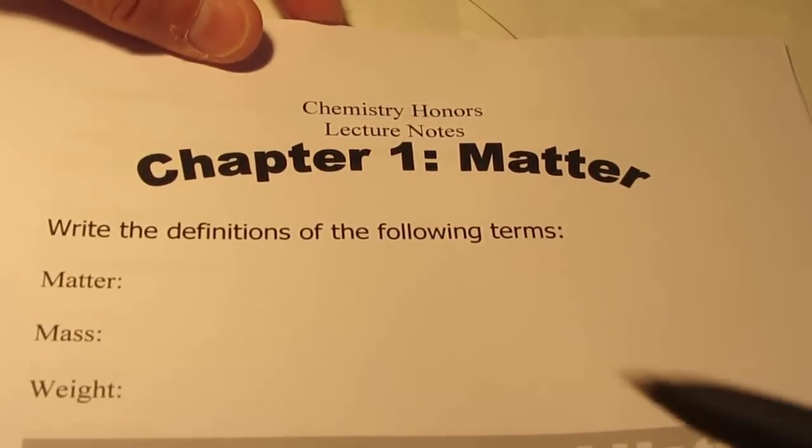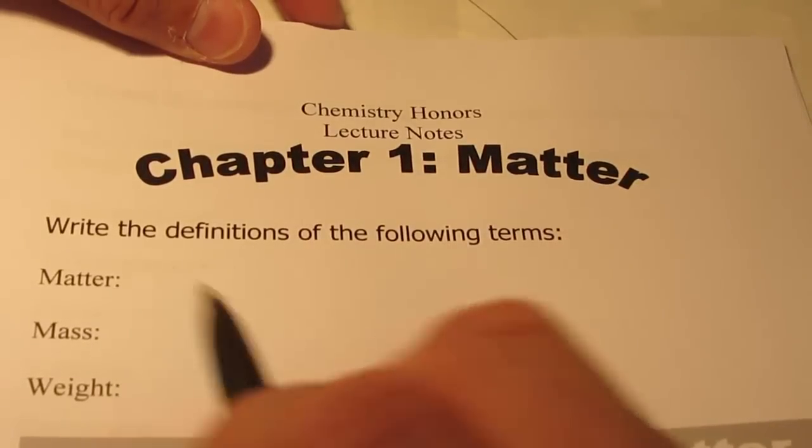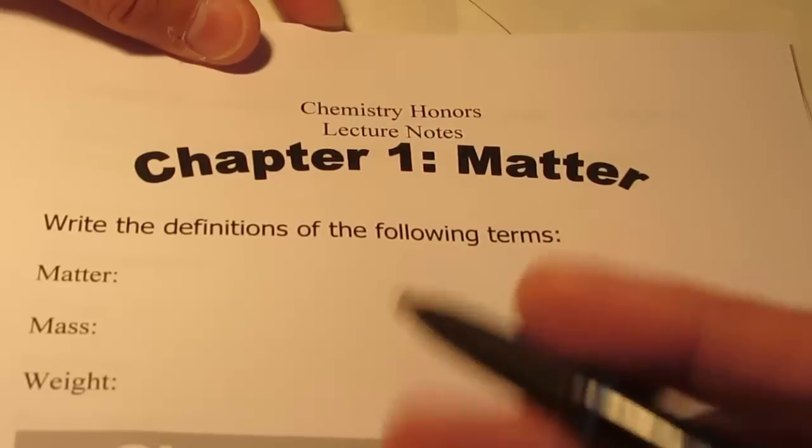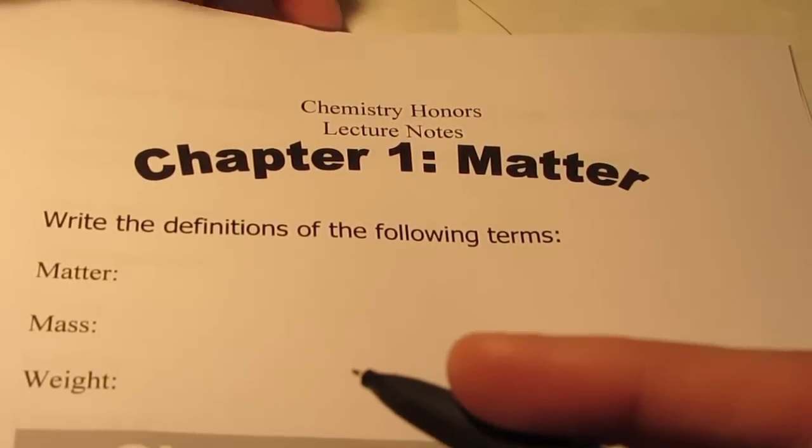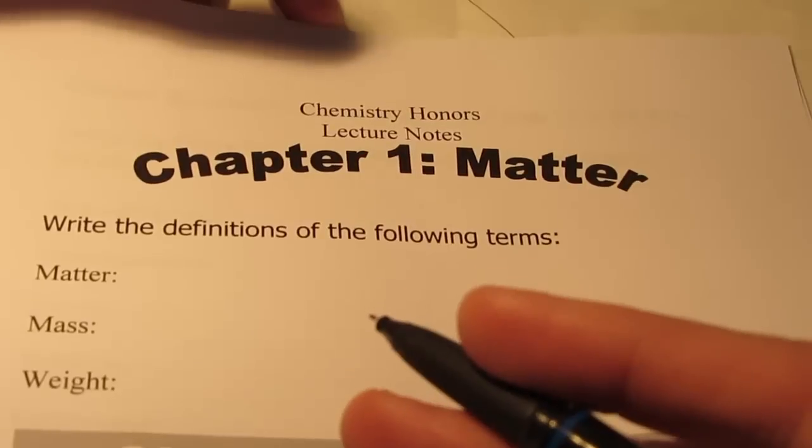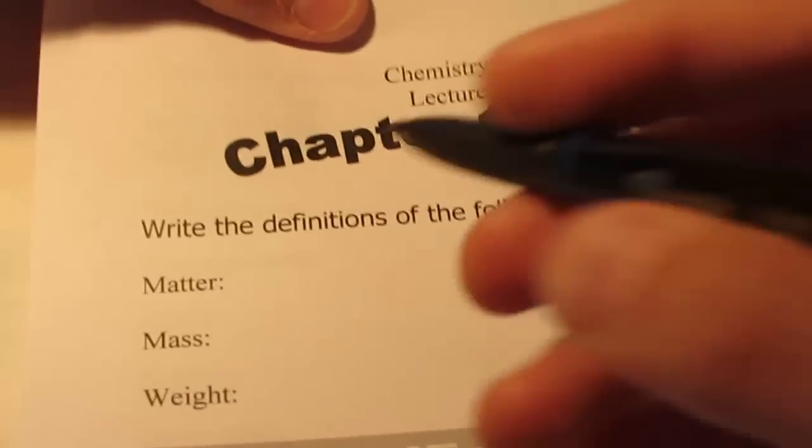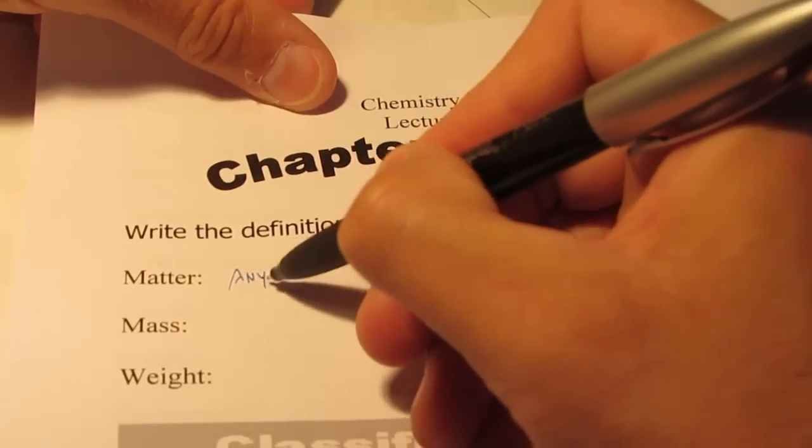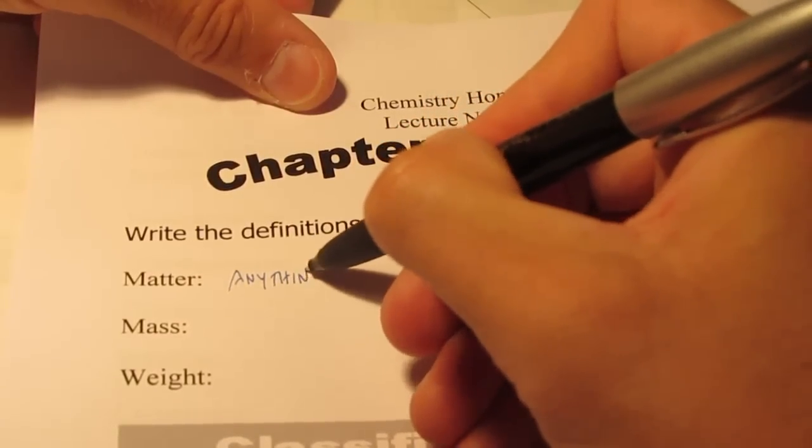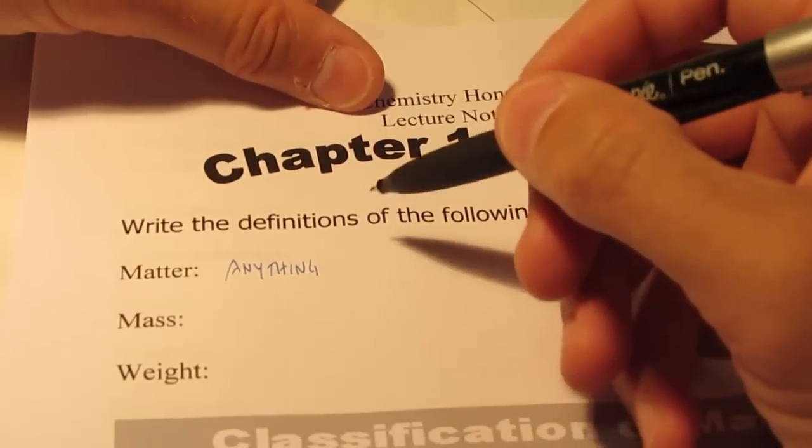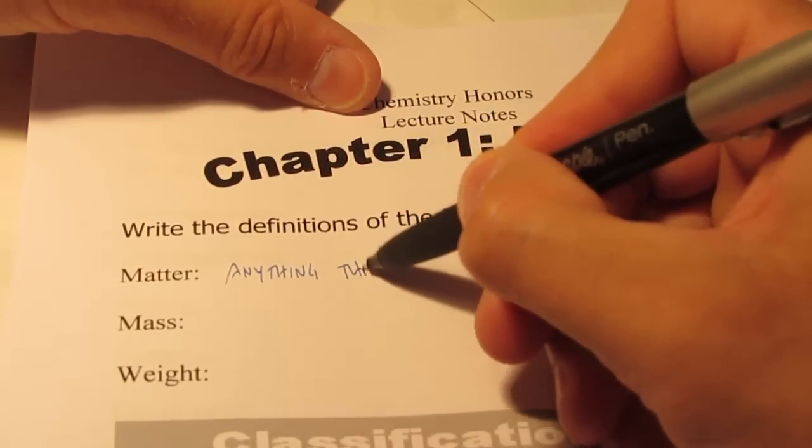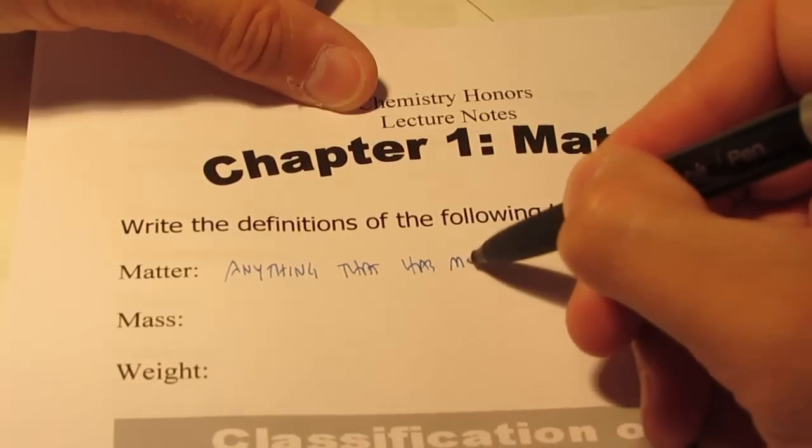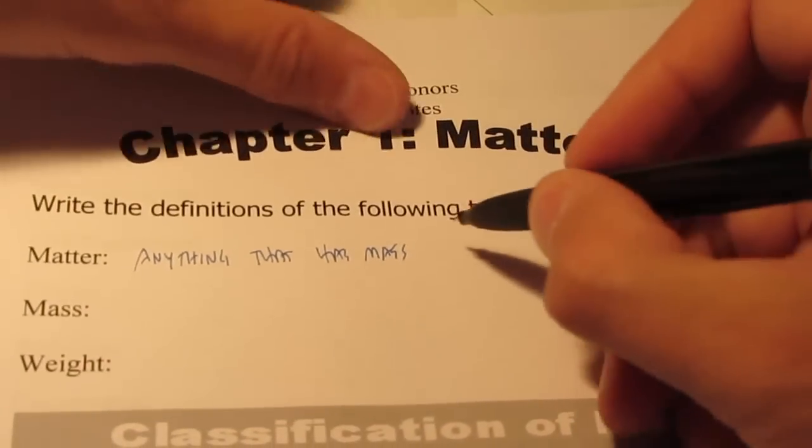The first thing we should probably do is define the term matter because after all chemistry by definition is the study of matter. So what is matter? Well it's a pretty broad definition. Matter is anything that has mass and takes up space.